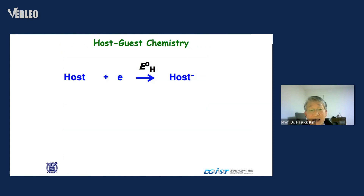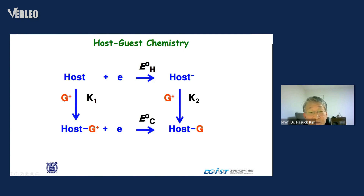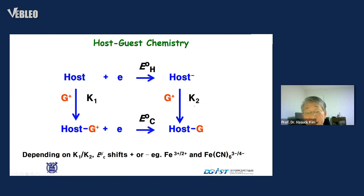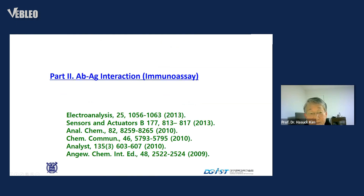The mechanism can be shown as follows: the host is first electrochemically reduced to form a host radical anion. At the same time, in the presence of guest ions, there is a chemical complexation between host and guest. The reduced product can also form a complex, making a whole cycle — we call the potentials E0H and E0C for the complex. Then, depending on K1 and K2 values, the potential shifts in either a positive or negative direction. One distinctive example is the ferric/ferrocyanide and ferric ferricyanide system, where the potential shift is very large.